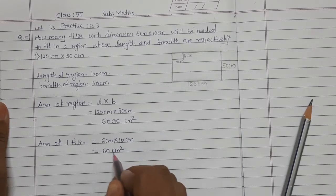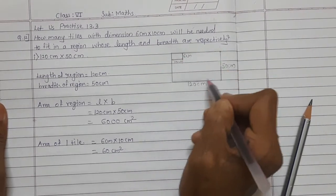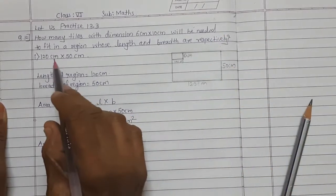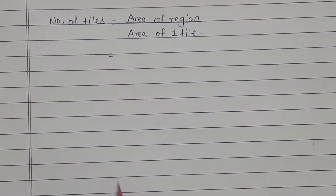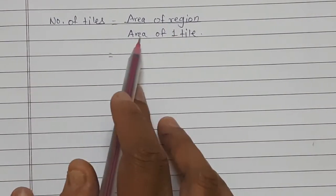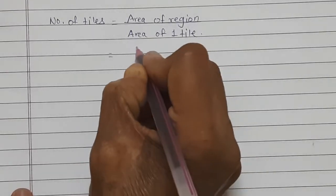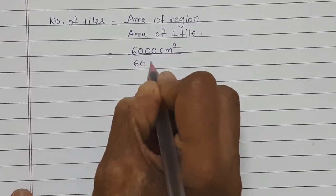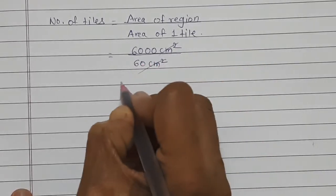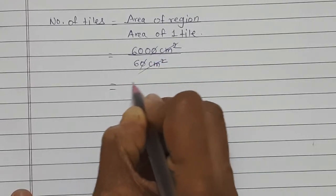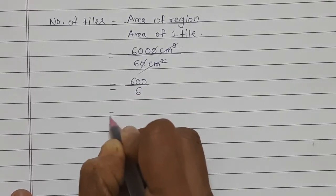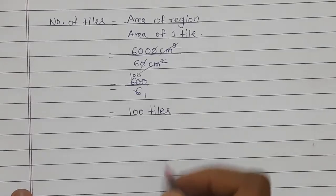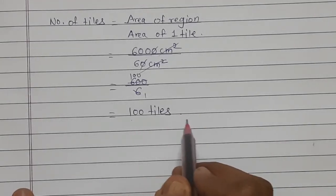With the same area tiles, how many tiles are required to fit in this region? Number of tiles needed equals area of region divided by area of one tile. Area of region is 6000 square centimeter and area of one tile is 60 square centimeter. The units cancel, and the zeros cancel, leaving 600 divided by 6. Calculating: the answer is 100 tiles.